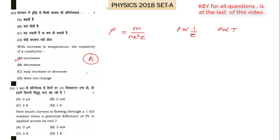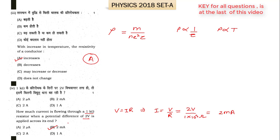The fourth part asks: how much current flows through a 1 kilo-ohm resistor when a potential difference of 2 volts is applied? Using Ohm's law, V = IR, so I = V/R = 2 volts / (1 × 10³ ohm) = 2 milliampere. So 2 milliampere is the answer, and option V is the right option for the fourth part.